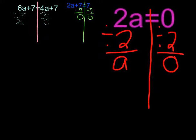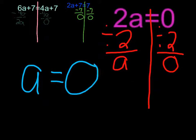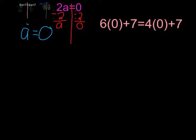So now you have your answer. a equals 0. But wait a minute. How do I know if it's right? So if you want to find out if you're right, you do 6 times 0. So that will equals 0. Plus 7. Equals 4 times 0. 0. Plus 7.